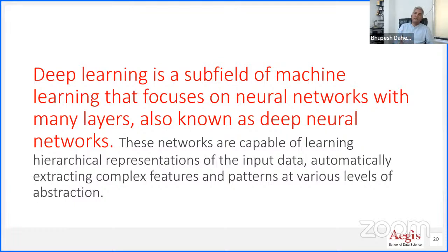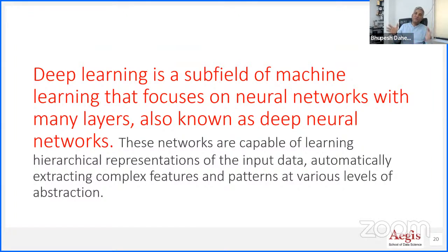Neural networks are so powerful that they can learn anything and approximate any kind of function. But deep learning requires a huge amount of data and large processing power, which was not available earlier. Thanks to cloud computing and GPUs provided by Nvidia, which became available in the last 10 years, and with the huge volume of data generated through the internet, deep learning became practical.